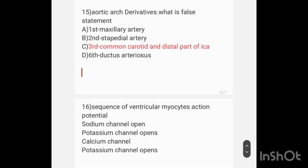Derivatives of aortic arches are given and which is a false statement? First arch: maxillary artery. Second arch: stapedial artery. Third arch: common carotid and distal part of internal carotid artery. Sixth arch: ductus arteriosus. The answer is the third arch — it gives the common carotid artery and proximal part of ICA, not the distal part of ICA.